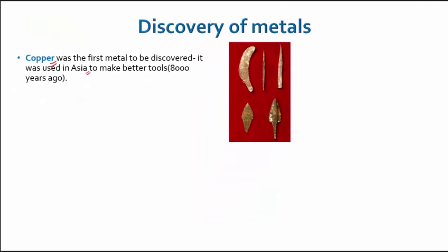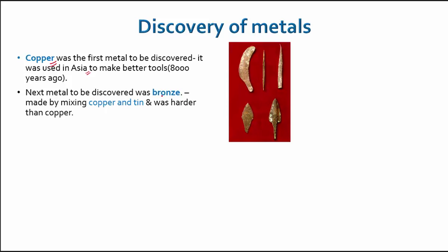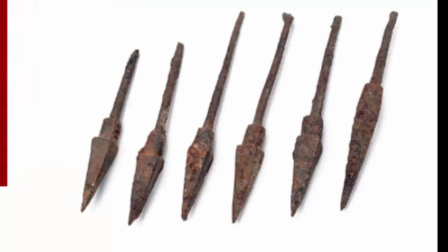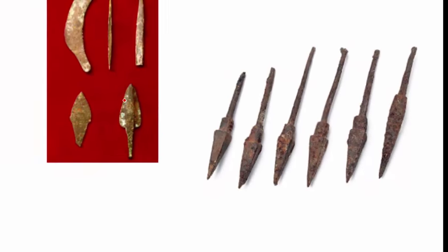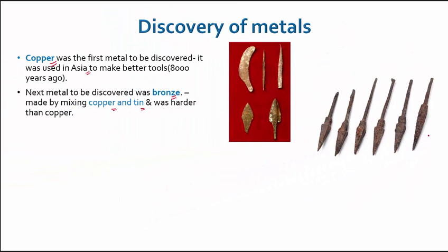The second metal to be discovered was bronze. Bronze was made by mixing copper and tin, and comparatively it was harder than copper. Its discovery occurred at different times in different parts of the world, but the earliest recorded usage dates back to nearly 6,000 years ago. These bronze tools are a lot better than the copper tools — there was improvement in both the shape and structure of tools.